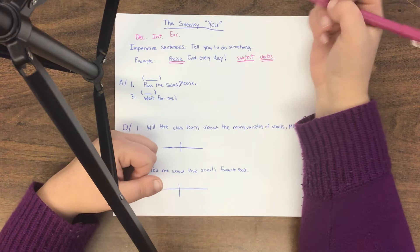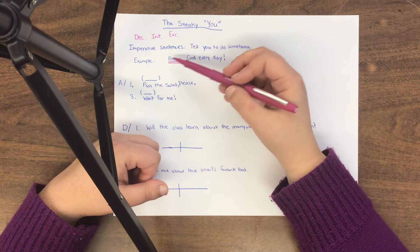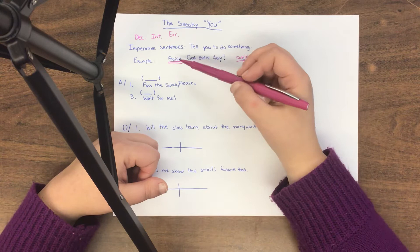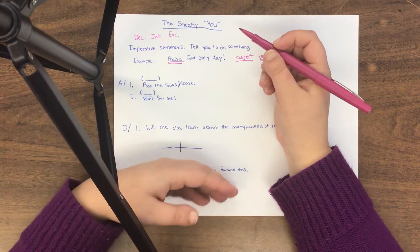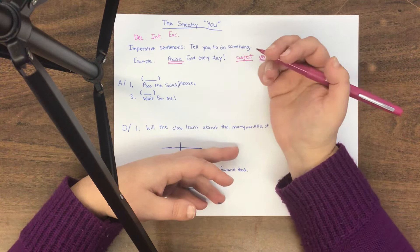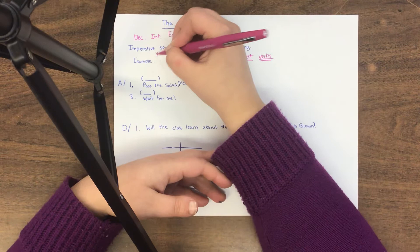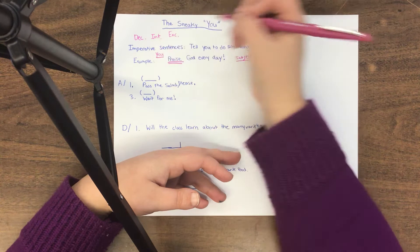But finding the subject is a little bit trickier because the sentence doesn't actually tell us who is doing the praising. Yeah, we're praising God, but God isn't the one praising. We are the ones praising. The people being asked to do it by the sentence. So whenever you see a sentence starting with a verb like this, it's usually telling you to do something. So the subject in the sentence is you. And that's why I call it the sneaky you because you won't ever see it written down. But you is indeed the sentence or the subject in every imperative sentence.